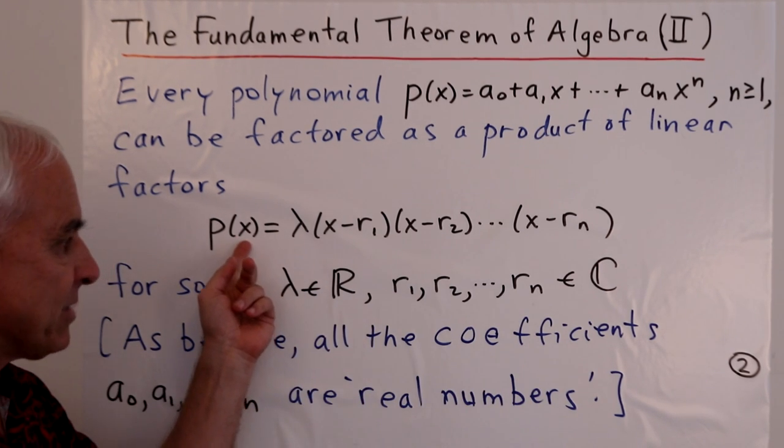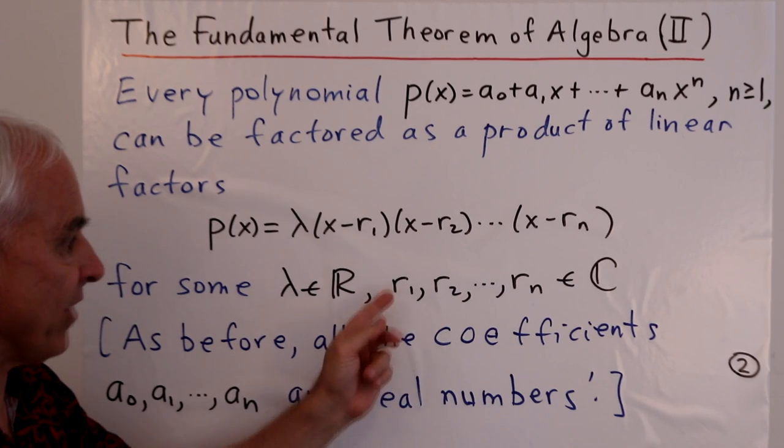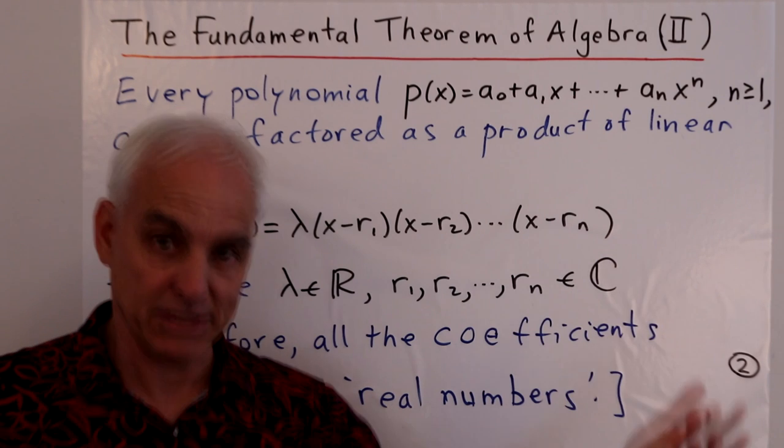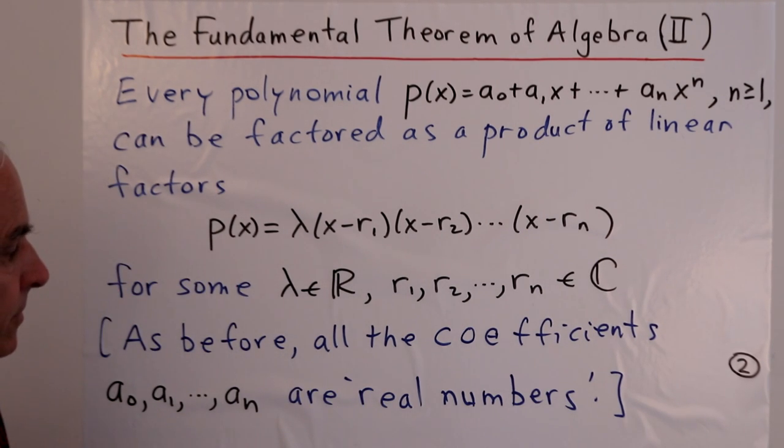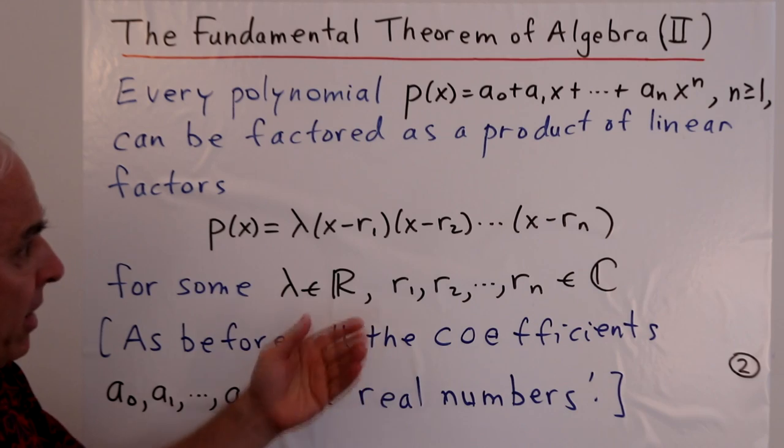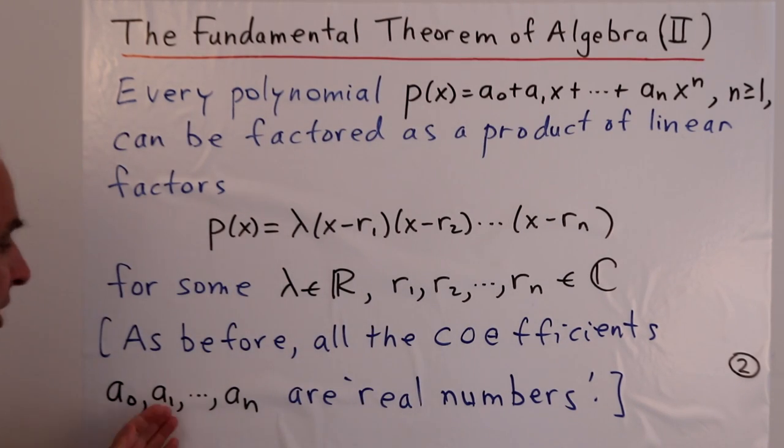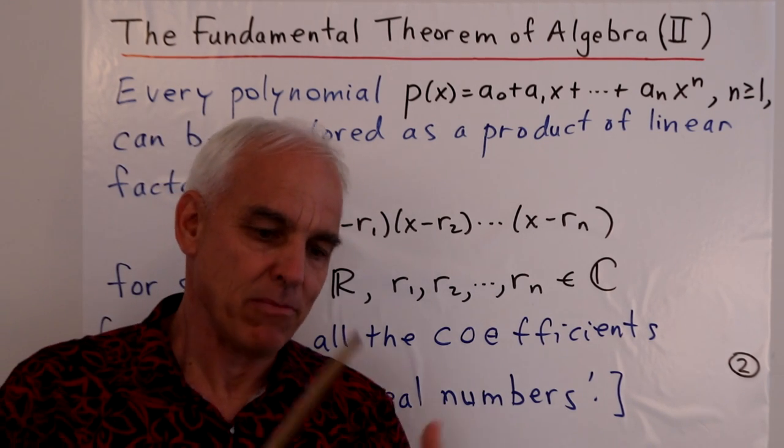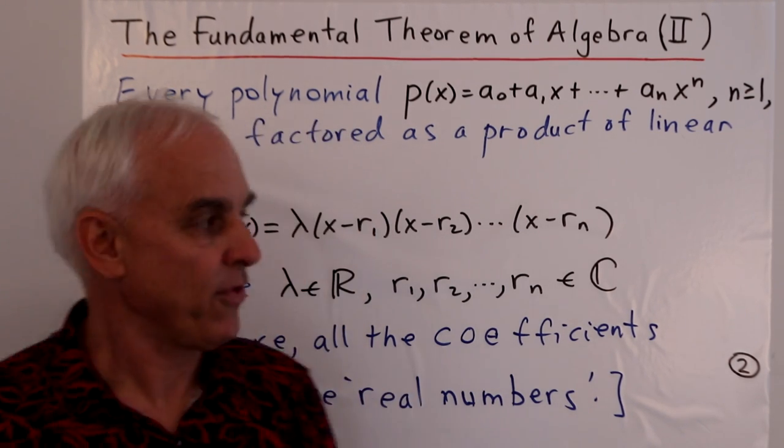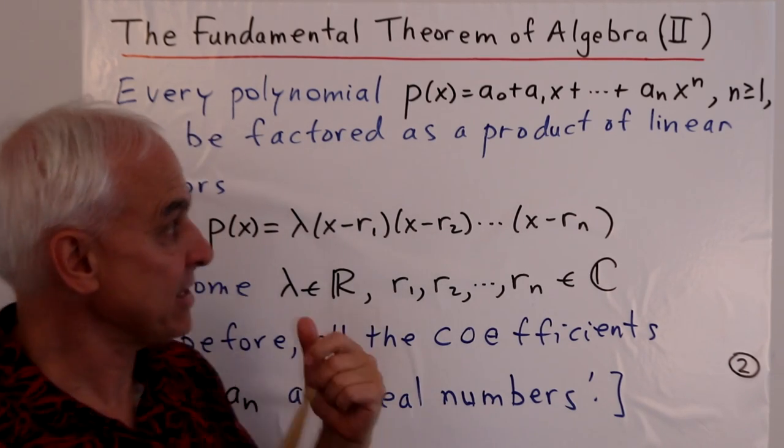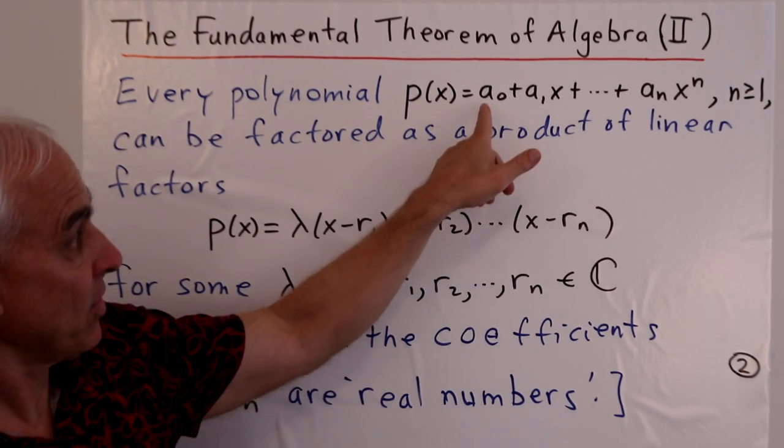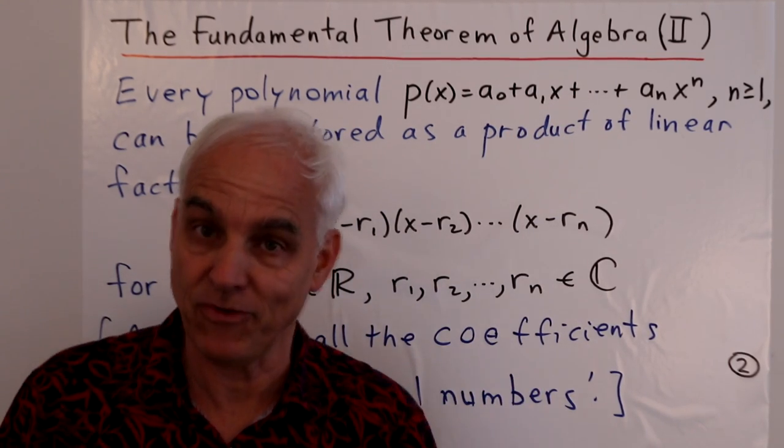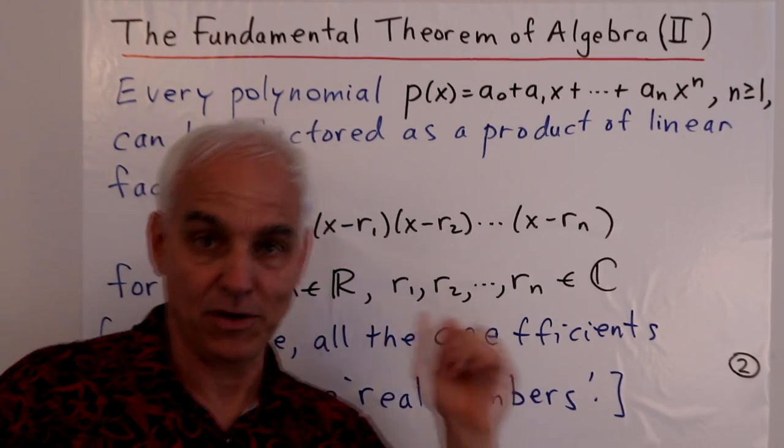And then these numbers are the zeros, or the roots of the polynomial. Clearly, if we replace x with one of these r's, say r_1, then one of these terms will be zero, and so the whole product will be zero. And as before, all these coefficients are generally real numbers. Although it turns out that there's a somewhat more general version of this theorem, which extends the same statements to the case where the coefficients are not just so-called real numbers, but are in fact more general complex numbers themselves. And the theorem still holds true.